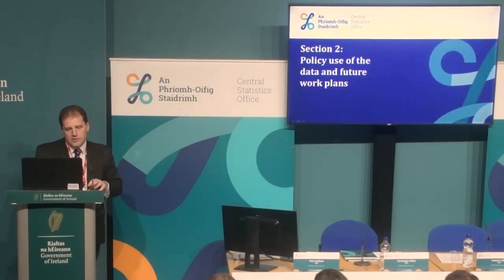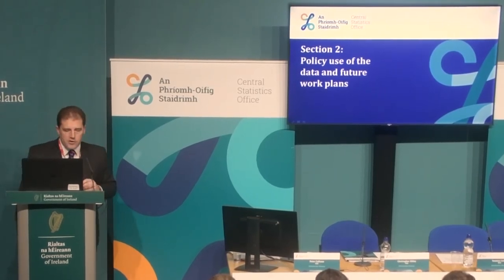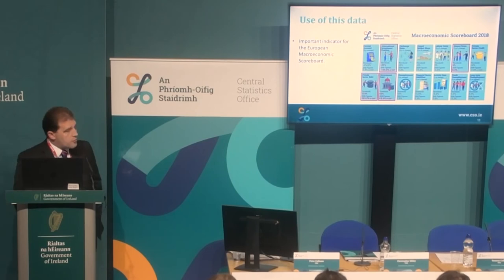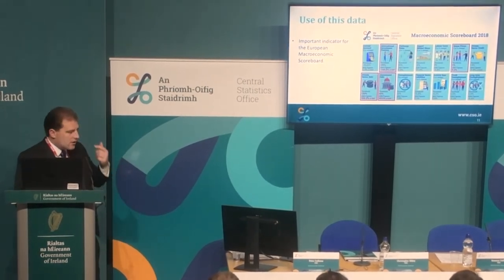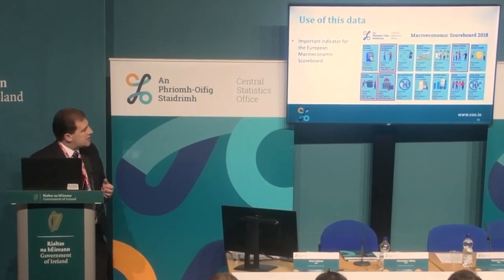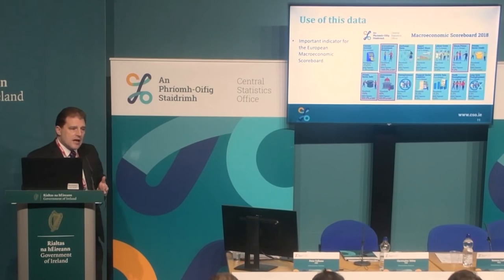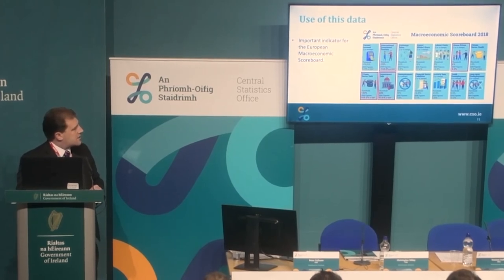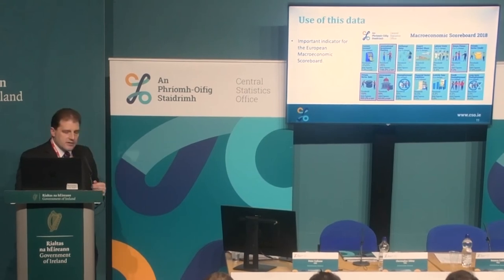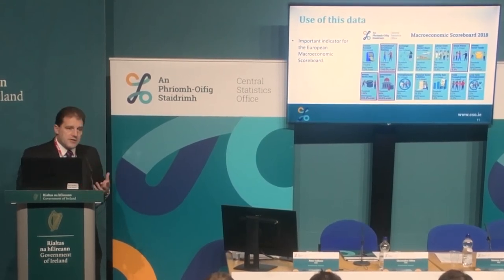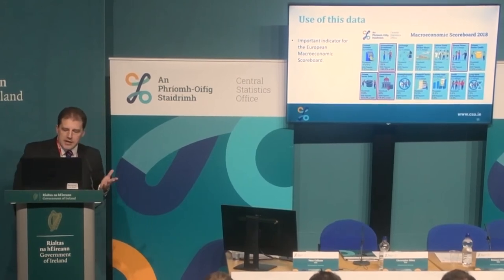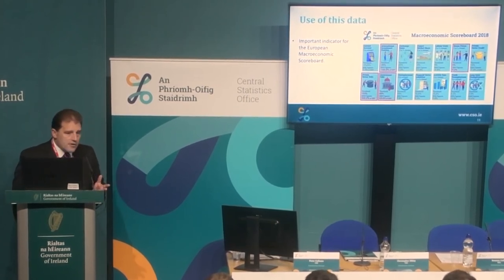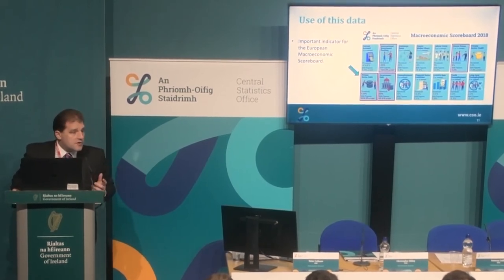Moving on to the policy use of the data and future work plans. The European Macroeconomic Scoreboard is a really good example — it was set up in 2011, first run around 2014, to highlight imbalances in the economy. The ones highlighted in red that we've been dealing with are house prices, government debt or foreign liabilities, and private sector debt. House prices and government debt are very well understood. The net international investment position — net liabilities to non-residents — and private sector debt are a little harder to understand, and that's where the foreign-domestic split really helps.